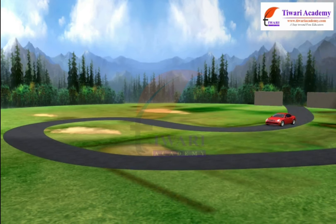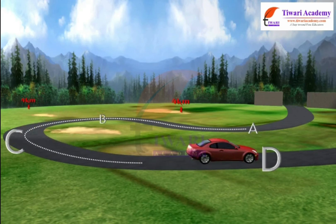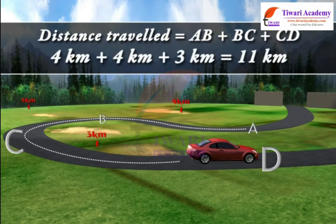For example, if a person moves from A to B 4 km, B to C 4 km, and then from C to D 3 km, then the total distance of the path covered is: Distance traveled = AB + BC + CD = 4 km + 4 km + 3 km = 11 km.